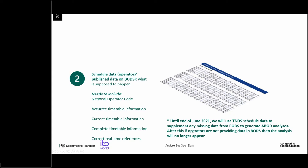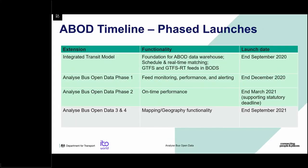One exception to data coming only from the Bus Open Data Service: until the end of June, as we transition and get more complete data on BODS, if there is no timetables data within BODS we will take this from the TNDS, which enables us to give some analysis initially. We will be stopping that towards the end of June, and at that point if an operator's data isn't in a fit state in BODS, that operator's analysis will drop off and no longer appear.